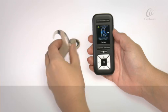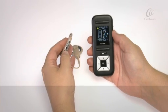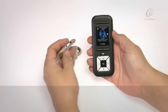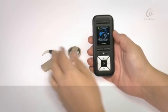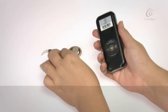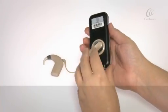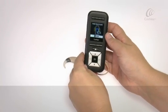Before pairing, ensure the processor is switched on. Hold the coil on the coil guides at the back of the remote assistant. The Pair Processor screen will display.